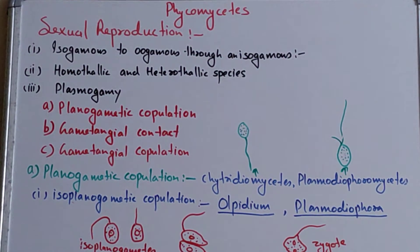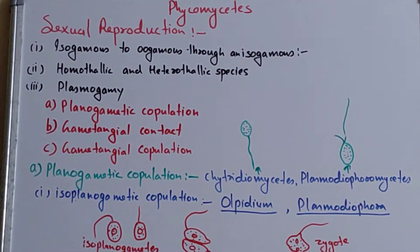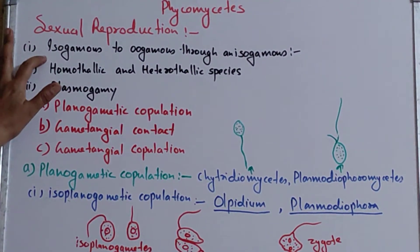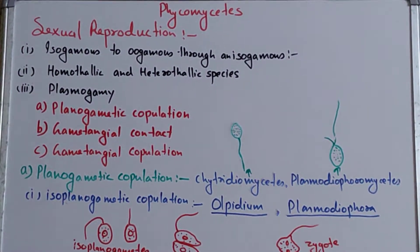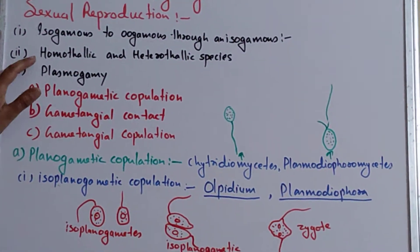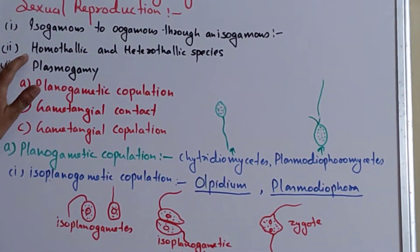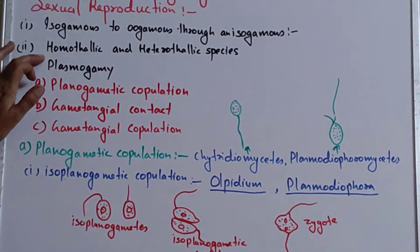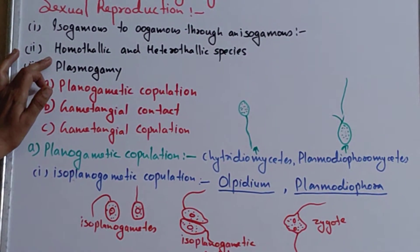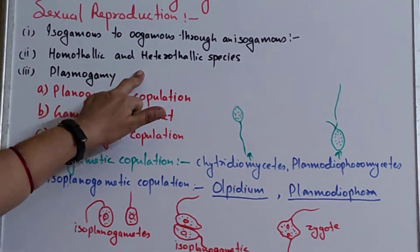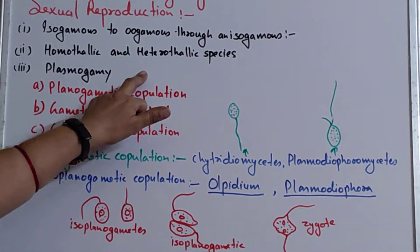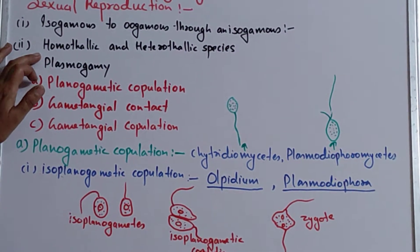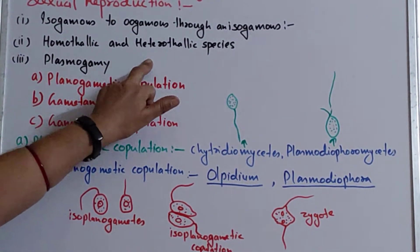Regarding sexual reproduction, there is great variation in these fungi. It ranges from isogamous to oogamous through an anisogamous type. The species are of two types: homothallic species and heterothallic species. In homothallic species, male and female gametes are produced on the same thallus, while in heterothallic species, they are produced on different thalli. Homothallic species are holocarpic type, and heterothallic species are eucarpic type.